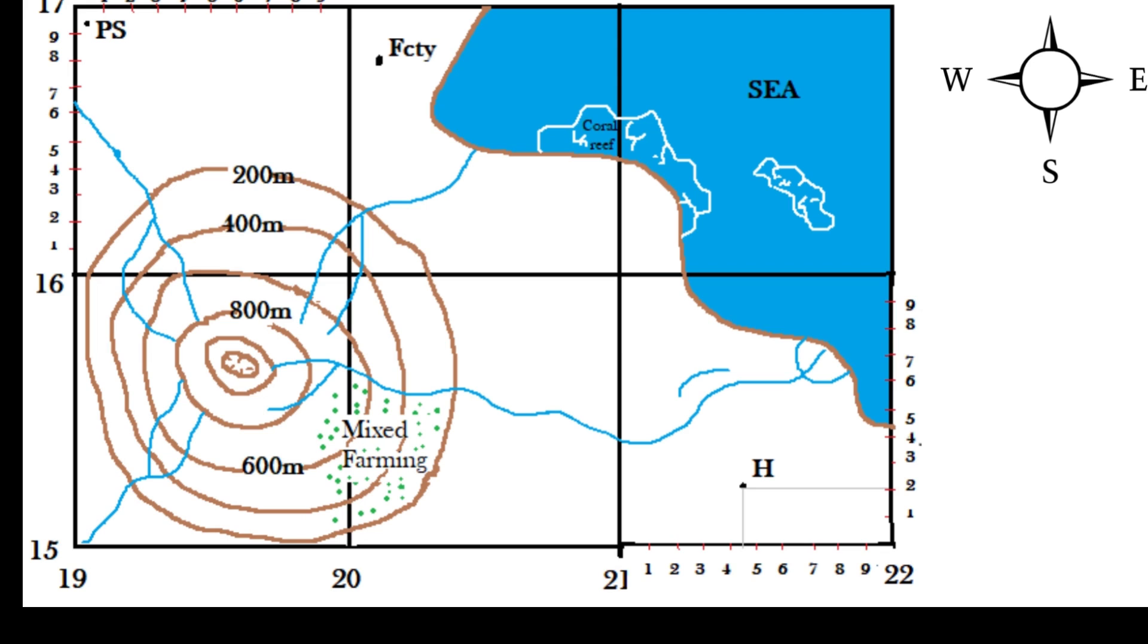After volcanic cones are formed they usually change over time. For example, their size could increase due to more materials being added by eruptions. Their tops could collapse due to very explosive eruptions and this could create calderas. The calderas could be infilled with water to create crater lakes. Another thing that could happen to these cones is that they could be influenced by the processes of denudation which include weathering, erosion and mass wasting.